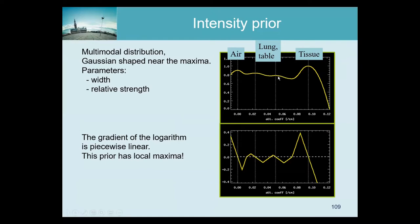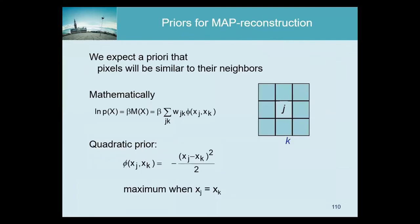One problem — pretty obvious — is that this function has local optima. If you make the prior very strong and give an initial tissue value where it should be lung, that value needs to move all the way from tissue to lung but will be pulled back constantly by the prior. So if you made the prior strong and have a poor initialization, it will get stuck in a local maximum near tissue attenuation. These absolute intensity priors suppress noise because in tissue the reconstructed values are pulled towards tissue, and neighboring voxels feel the opposite pull.